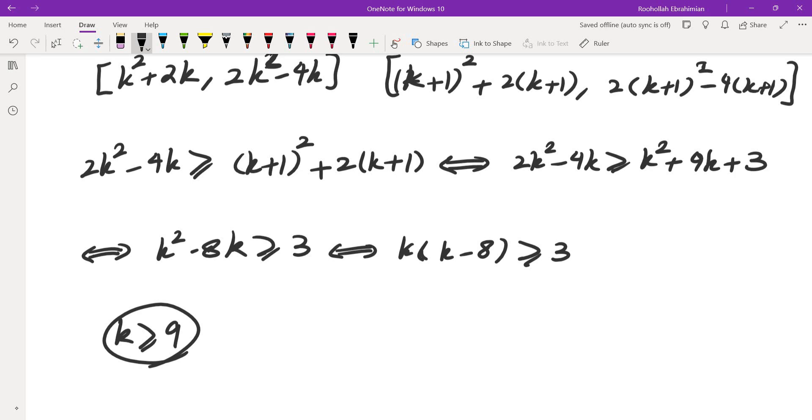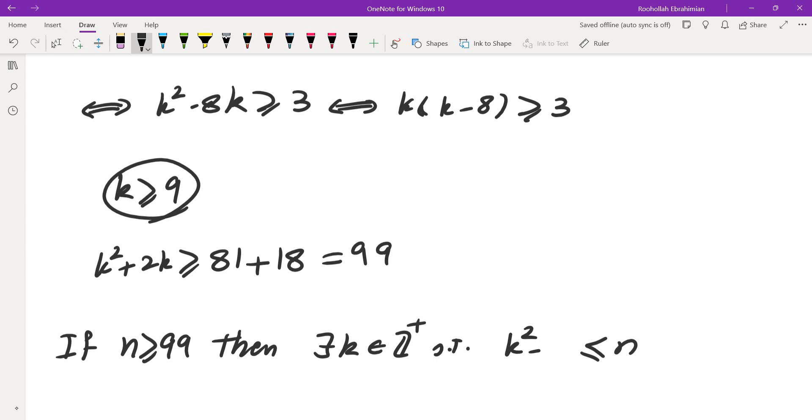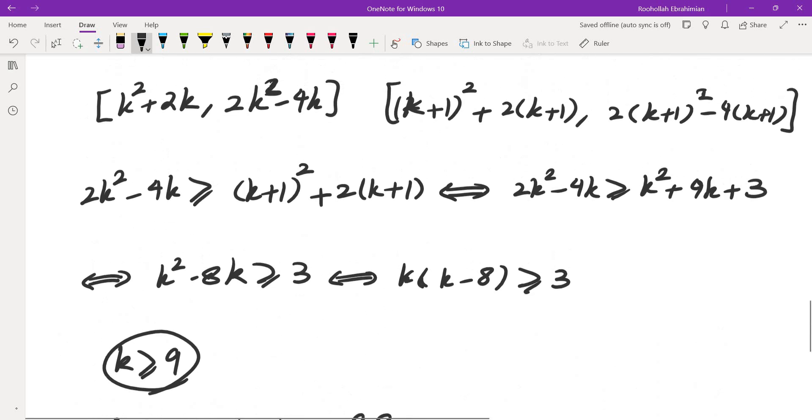So if k is greater than or equal to 9, then they would all have common terms. So now let's see what happens when k is greater than or equal to 9. k squared plus 2k is going to be greater than or equal to 81 plus 18, which is 99. So if n is greater than or equal to 99, then there is some k such that n is between k squared plus 2k and 2k squared minus 4k. I believe that's what we had.